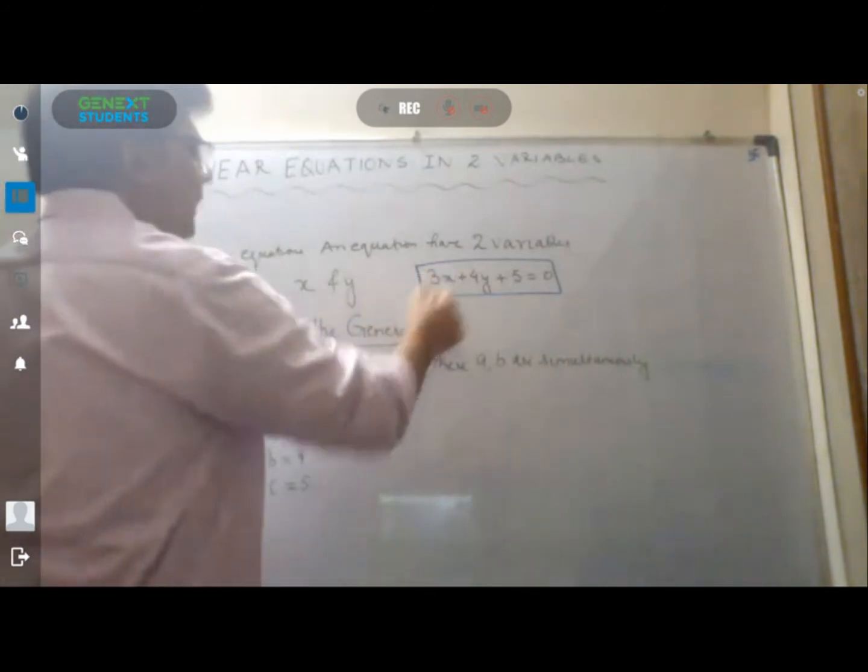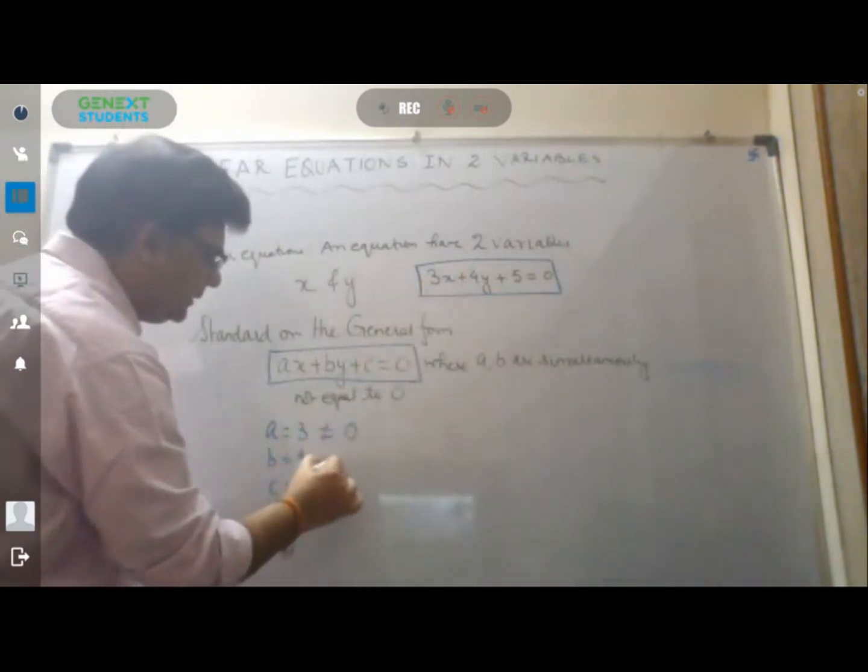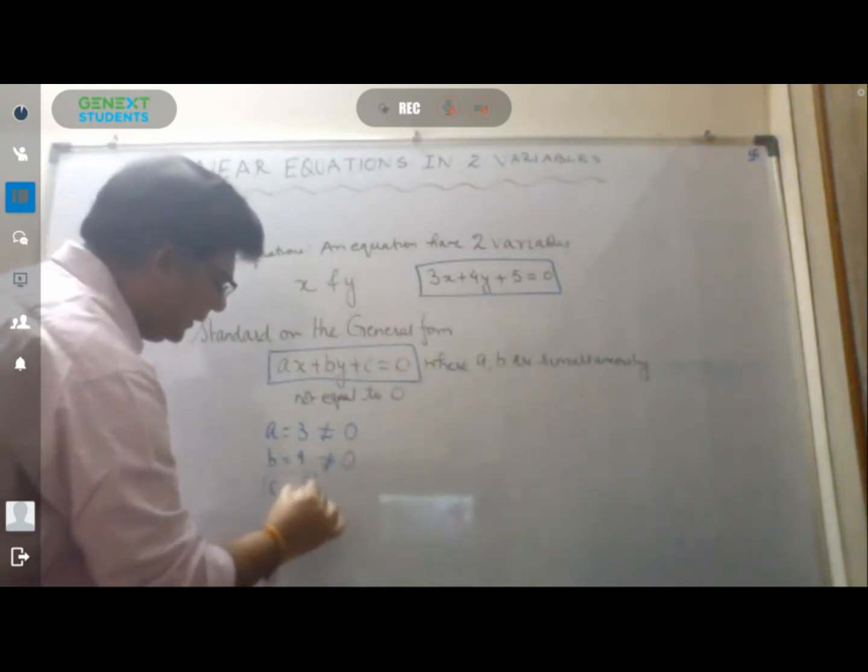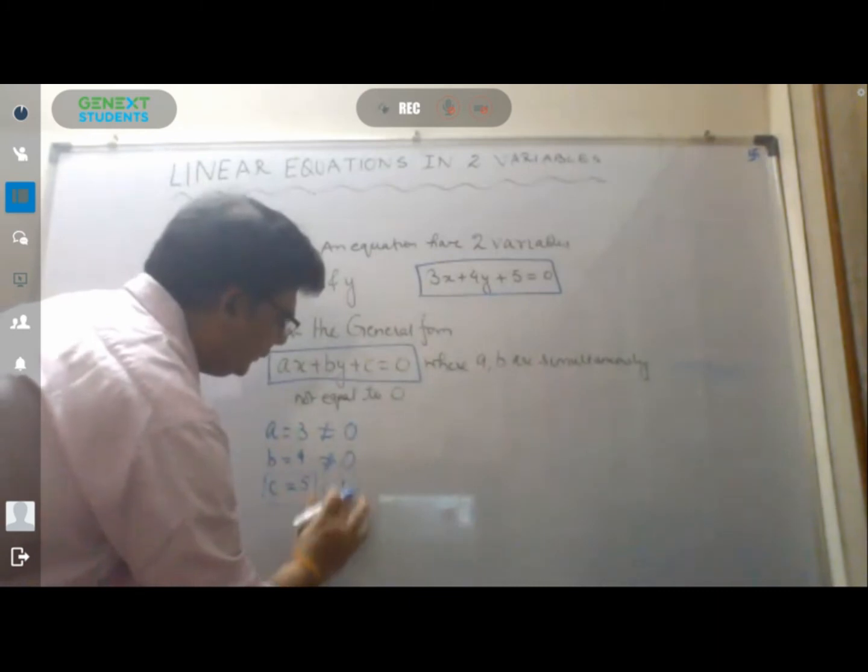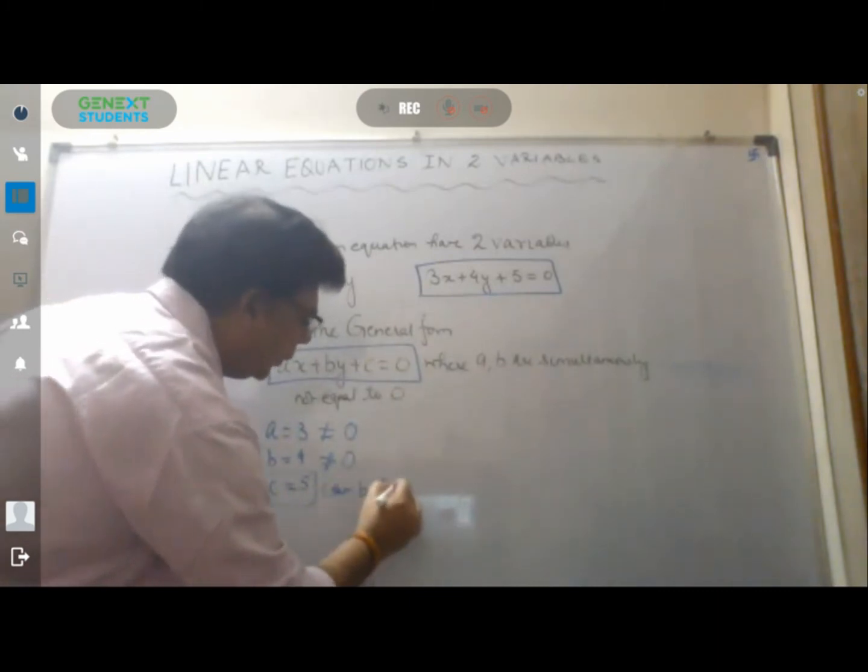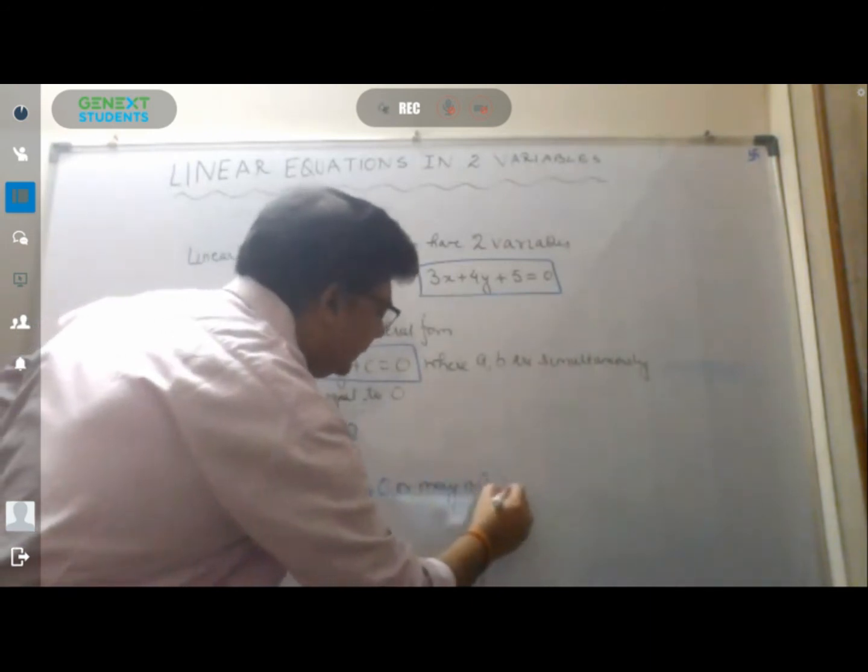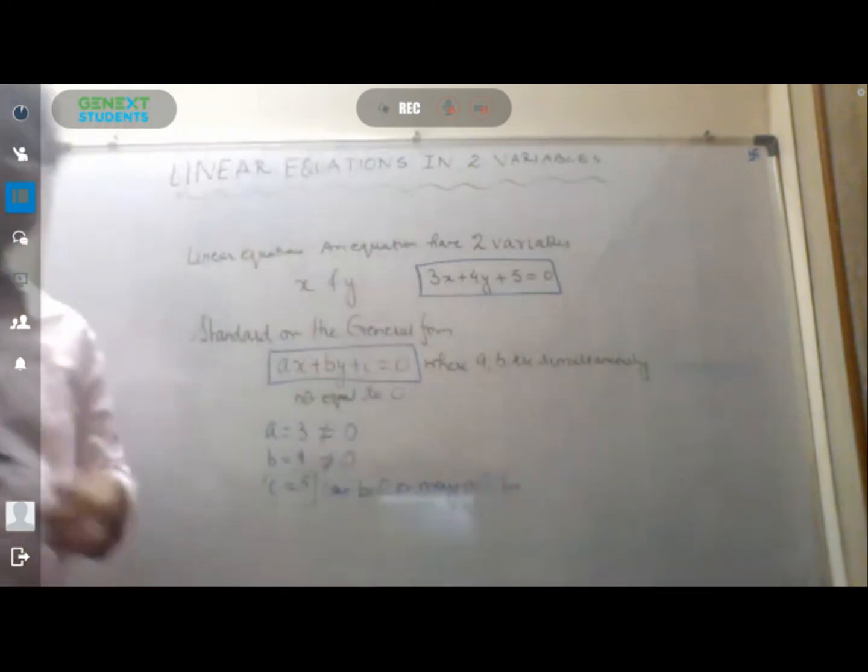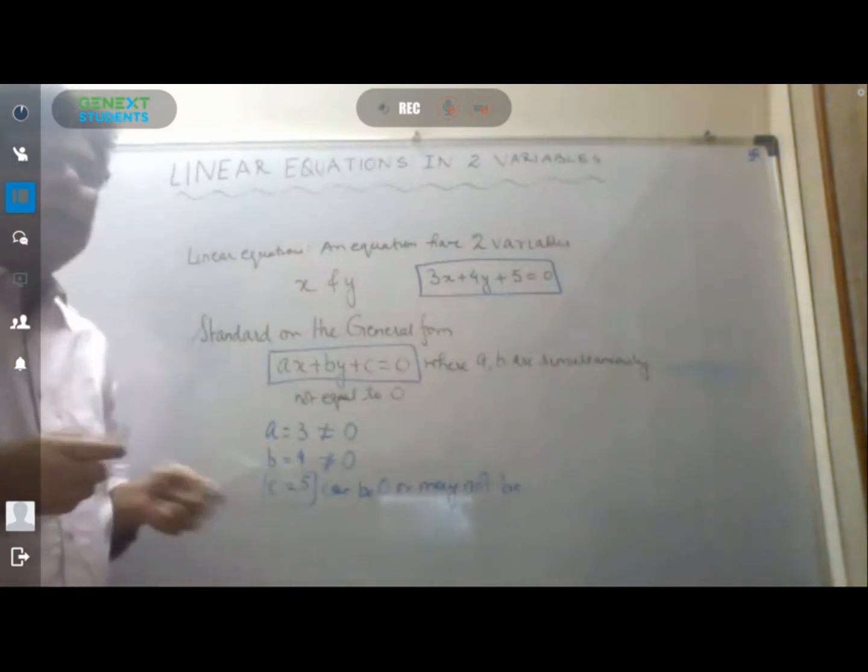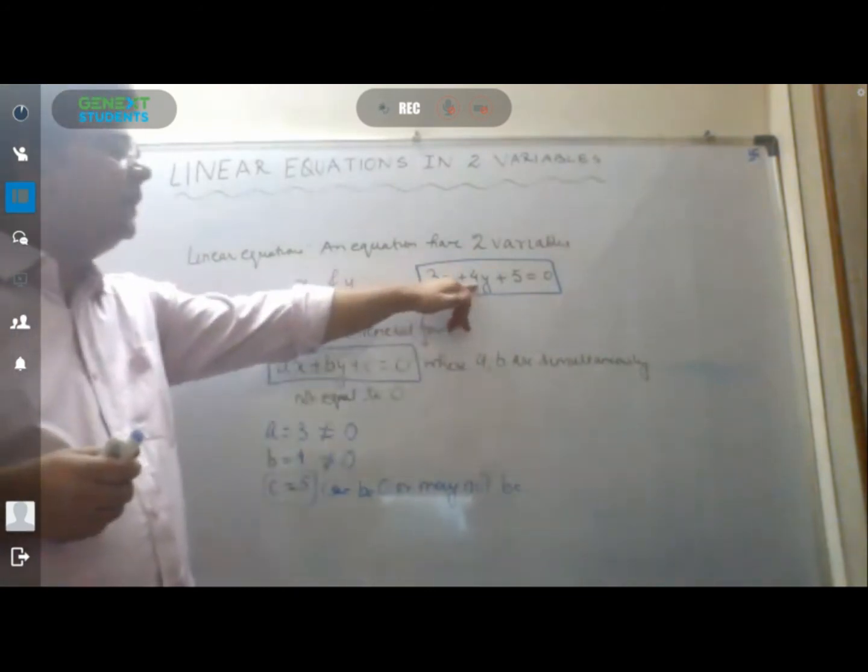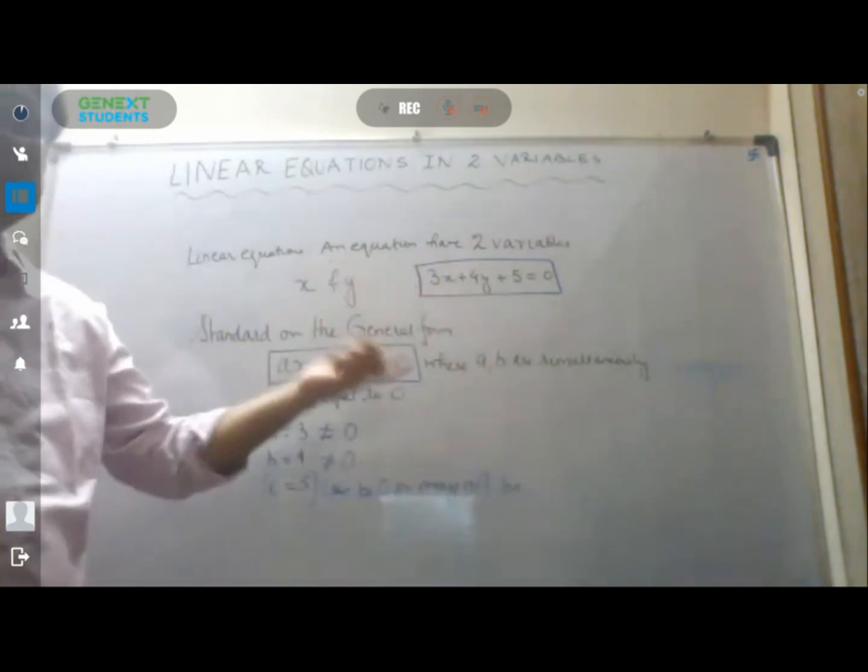In this equation, a is not equal to 0, b is not equal to 0, and c can be 0 or may not be. It doesn't matter because these are two variables, x and y, and a constant term.